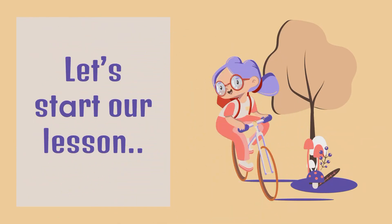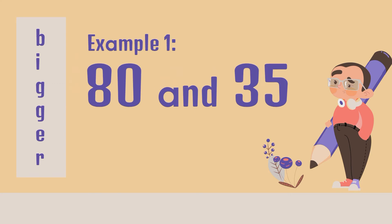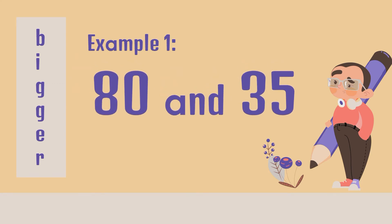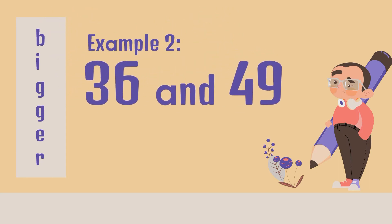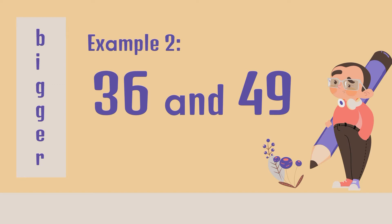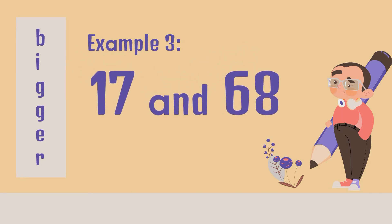Let's start our lesson. Let's have bigger number. Example 1: We have 80 and 35. Which number is bigger? Cross it out. 80. Very good. How about example 2? We have 36 and 49. Which one is bigger? 49. Good job. Let's go to another example. We have 17 and 68. Which number is bigger? Cross it out. 68. Very good.